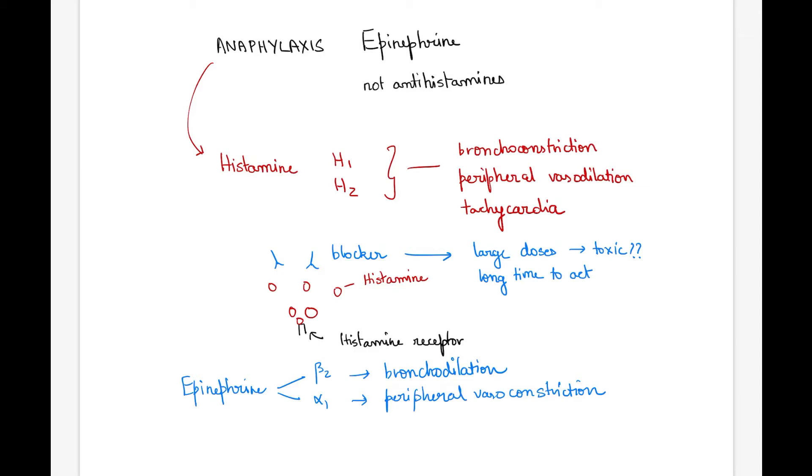There is also evidence that beta-2 receptors on mast cells and macrophages could be stimulated, which might help reduce histamine release into the circulation.